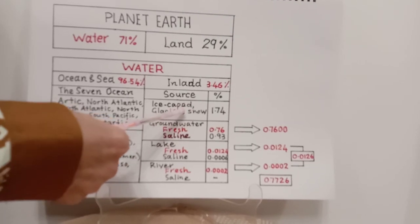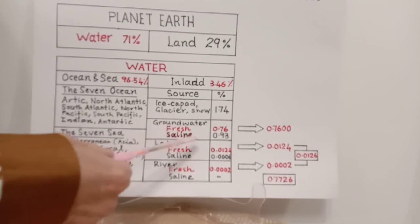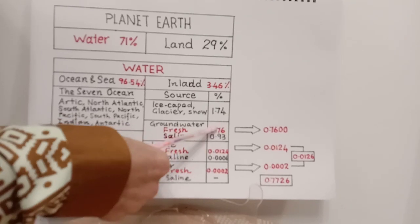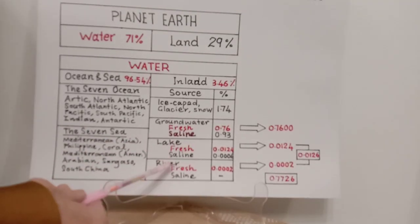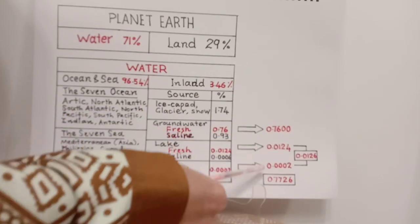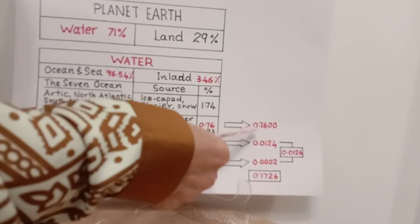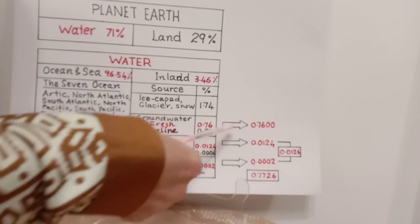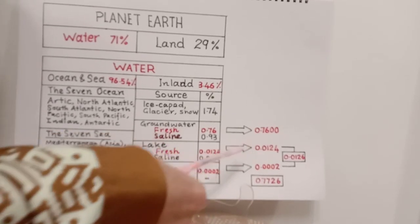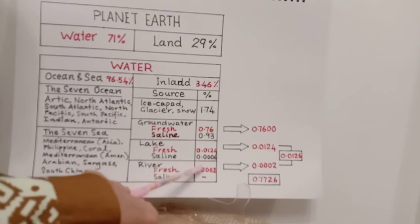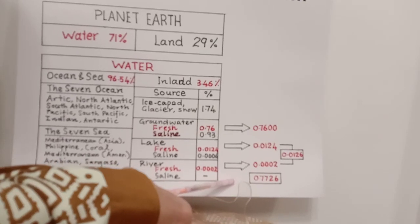Taking into consideration that ice caps, glaciers, and snow are not consumable at present, if we add up the contribution of freshwater from groundwater, from lakes, and from rivers, we find: groundwater freshwater is 0.76%, lake freshwater is 0.0124%, and river freshwater is 0.002%, making the total 0.7726%.